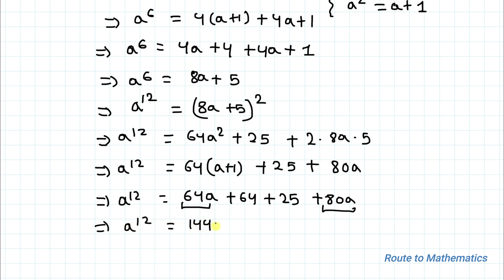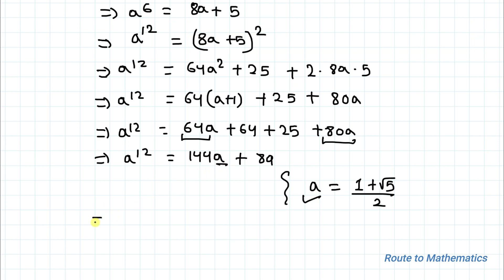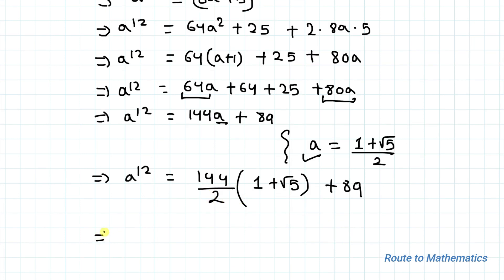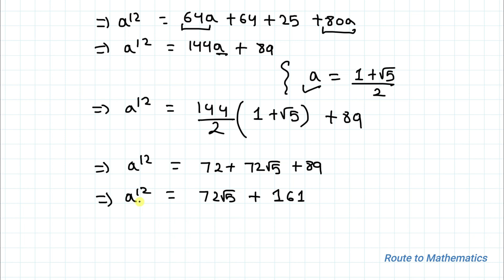We are already given a equals to 1 plus root 5 by 2. Substituting this value, we get a to the power 12 equals to 144 multiplied by (1 plus root 5) divided by 2, plus 89. This simplifies to 72(1 plus root 5) plus 89, which gives us 72 root 5 plus 161. Thus a to the power 12 equals to 72 root 5 plus 161. That's our answer. I hope you understood the solution. Thanks for watching — please subscribe to my channel and click the bell icon for more interesting videos.